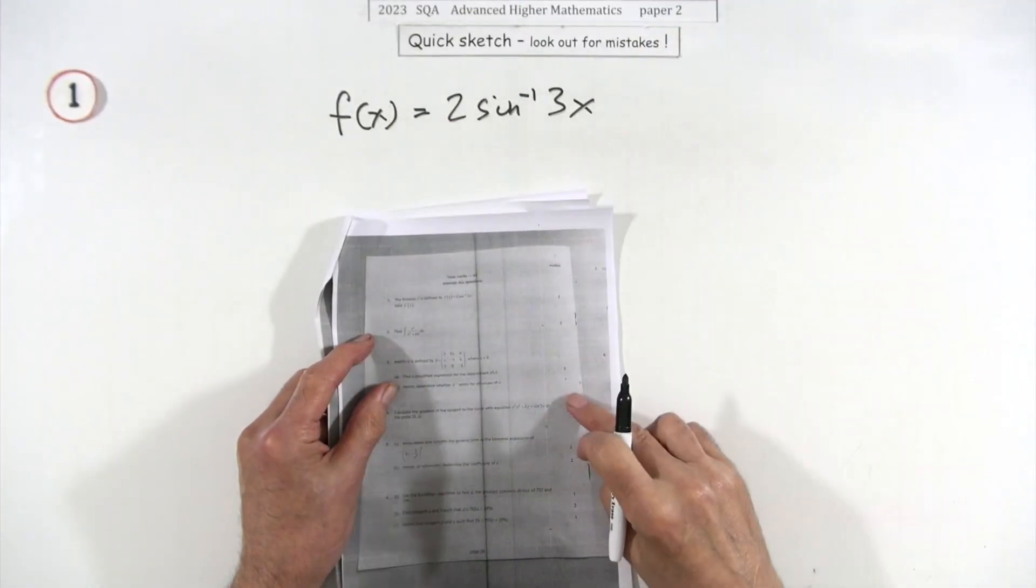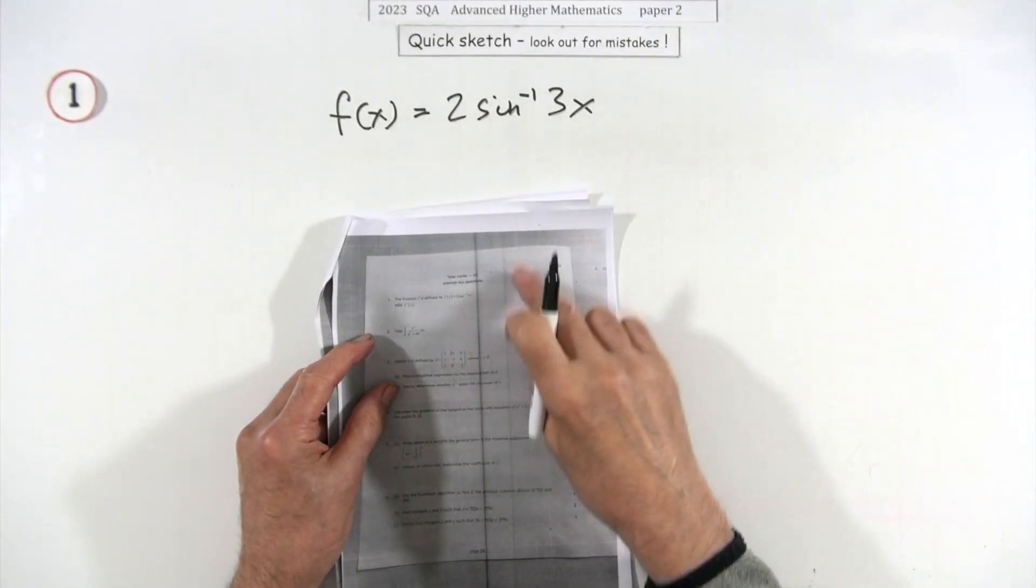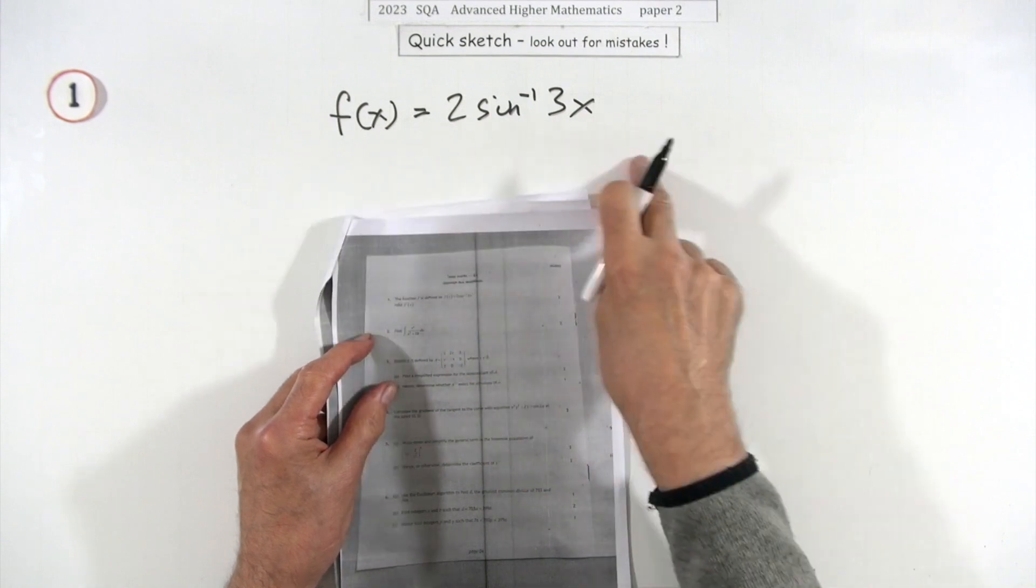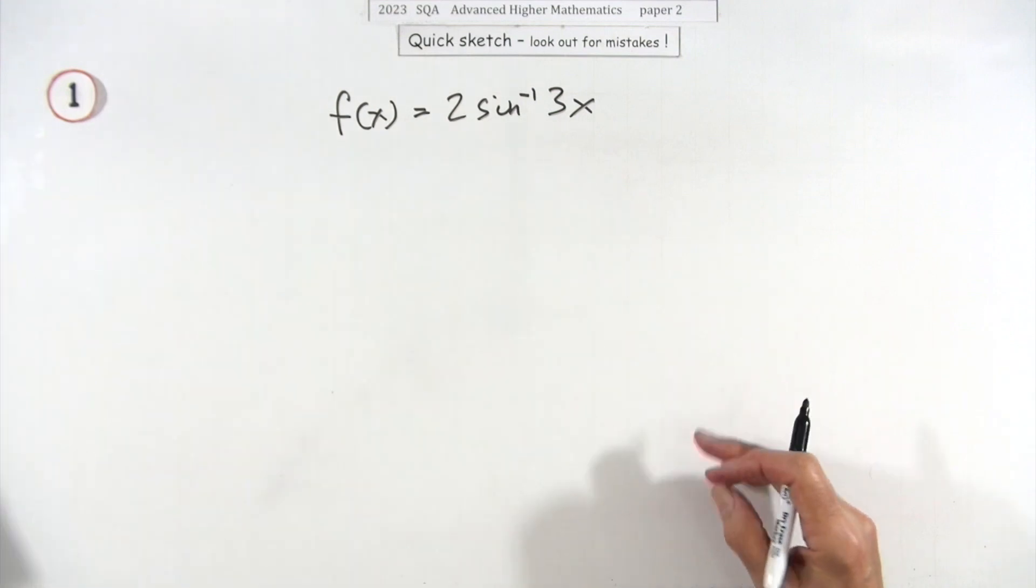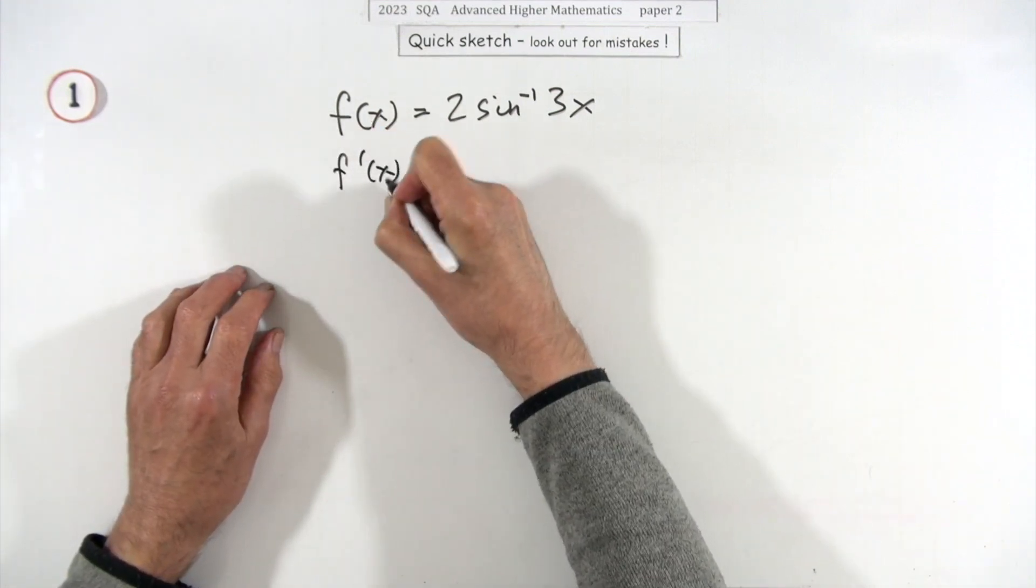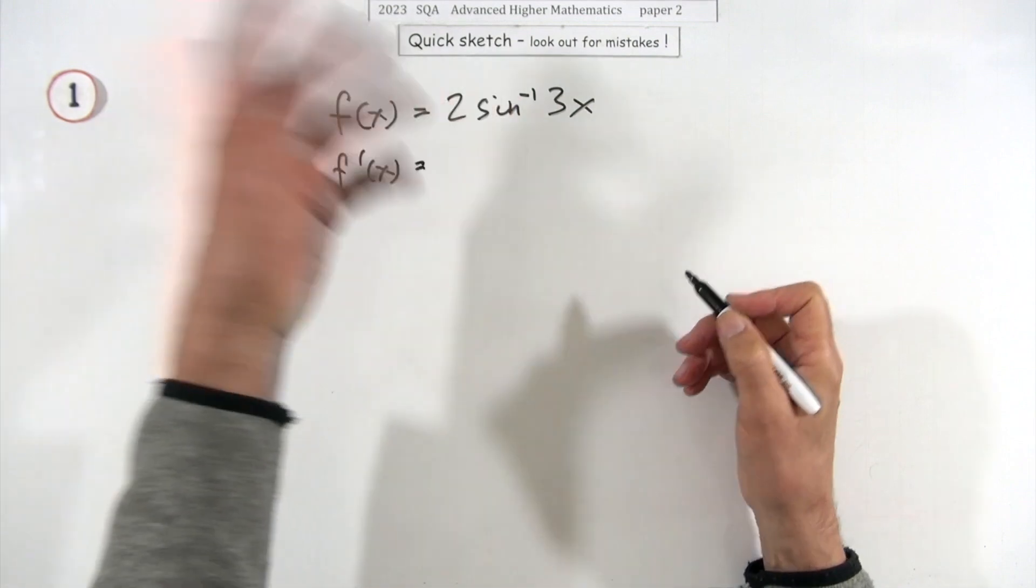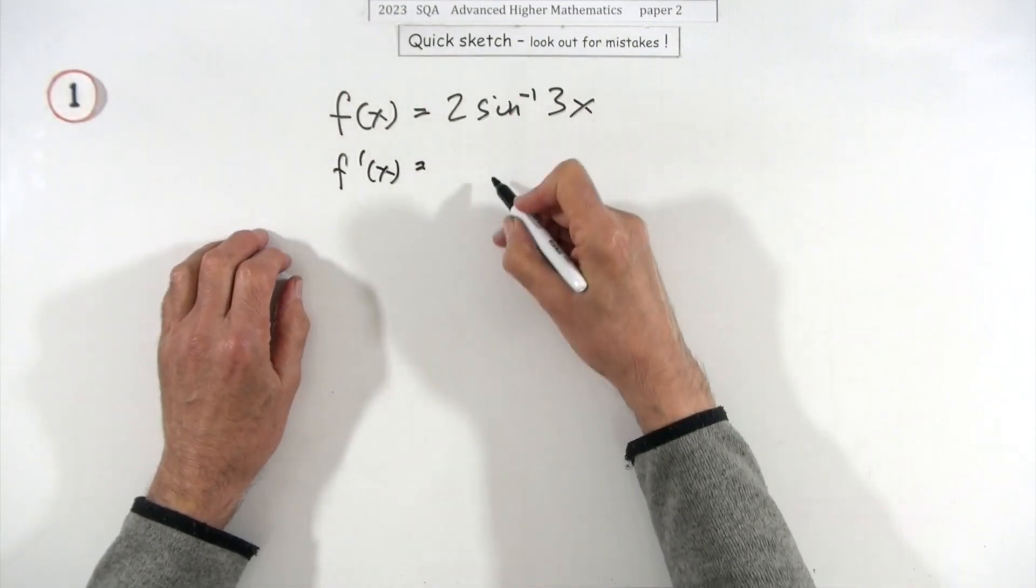So number one, the first question in paper two. A two mark question here for differentiation, just like you'd get in paper one. I'm not really sure why that's there - maybe it's a stocking filler, a couple of marks left over to fill in somewhere, because you just find that at the front.